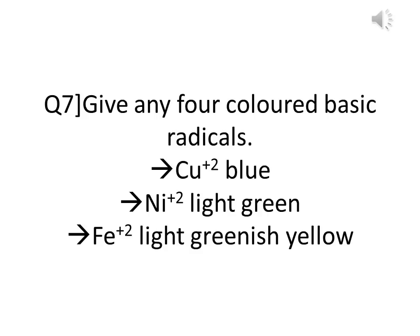Name four colored basic radicals: Cu²⁺ is blue, Ni²⁺ is light green, and Fe²⁺ is light greenish-yellow. A basic radical is the positive metal ion in a salt — for example, in NaCl, Na⁺ replaces H⁺ from HCl, making Na⁺ the basic radical. Positive metal ions are called basic radicals, while negative ions such as Cl⁻, SO₄²⁻ (sulfate), and NO₃⁻ (nitrate) are called acidic radicals.